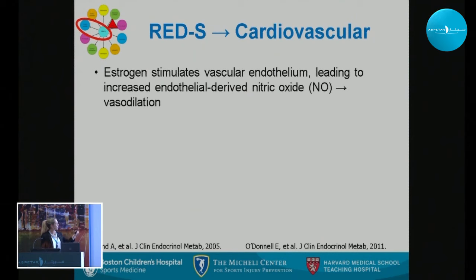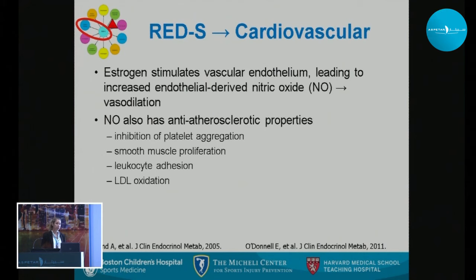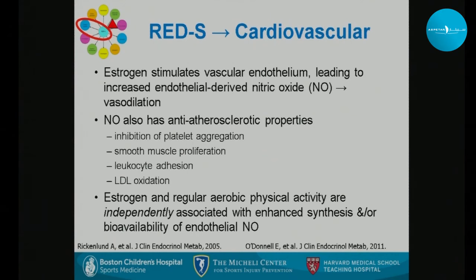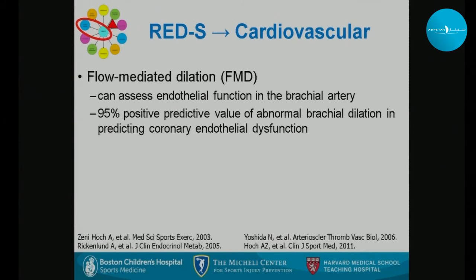Estrogen stimulates vascular endothelium, leading to increased endothelial-derived nitric oxide, which leads to vasodilation needed for proper muscle function. Nitric oxide also has anti-atherosclerotic properties, inhibiting platelet aggregation and LDL oxidation. Estrogen and regular aerobic physical activity are independently associated with enhanced synthesis and bioavailability of endothelial nitric oxide. Flow-mediated dilation of the brachial artery can assess endothelial function with a 95% positive predictive value of abnormal coronary endothelial function.